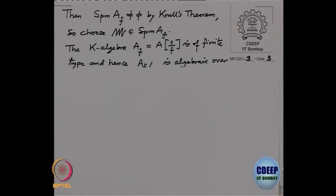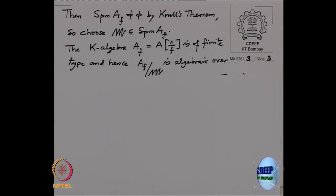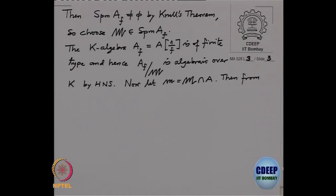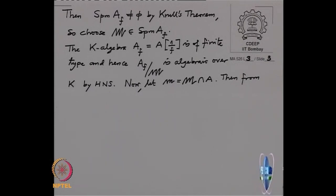So it is a finite-type K-algebra, and I can apply the earlier consequence — what I call Hilbert Nullstellensatz — which says that if you have a field extension which is of finite type, then it must be algebraic. So A_F modulo gothic M is an algebraic extension.